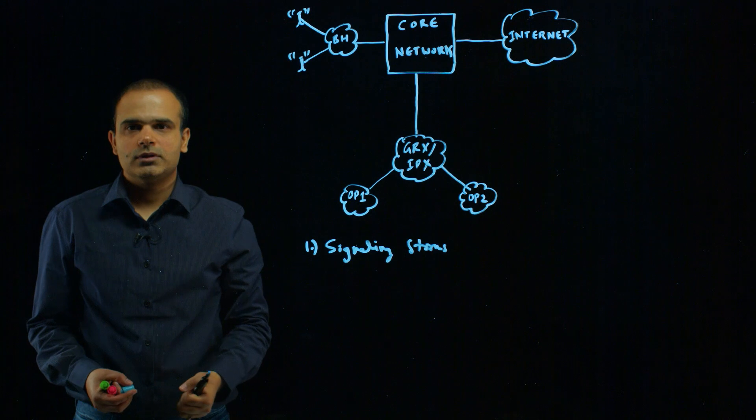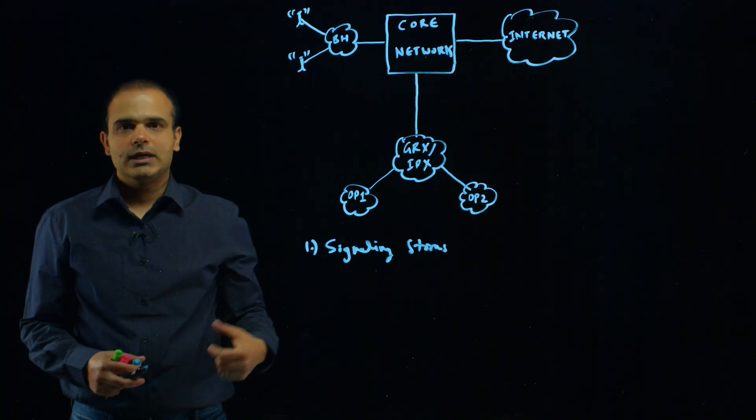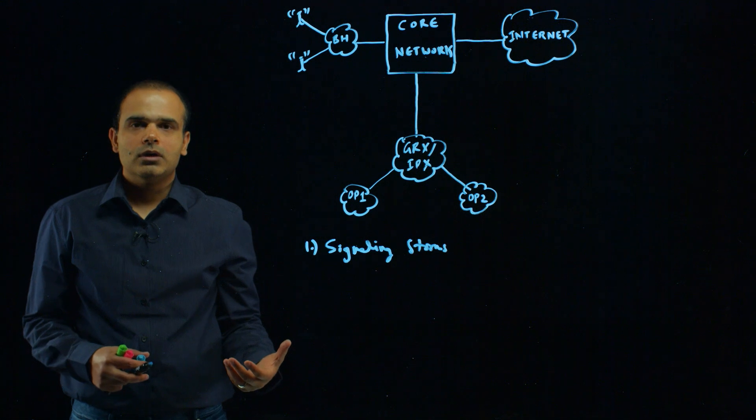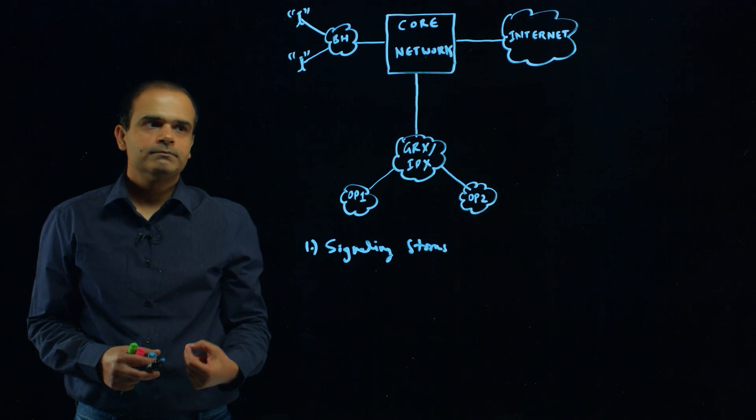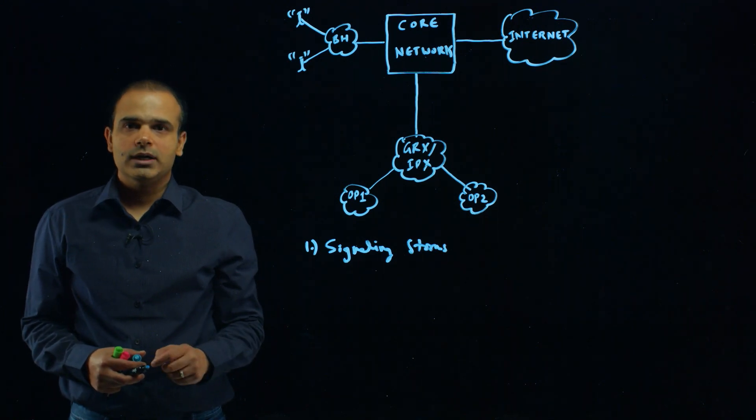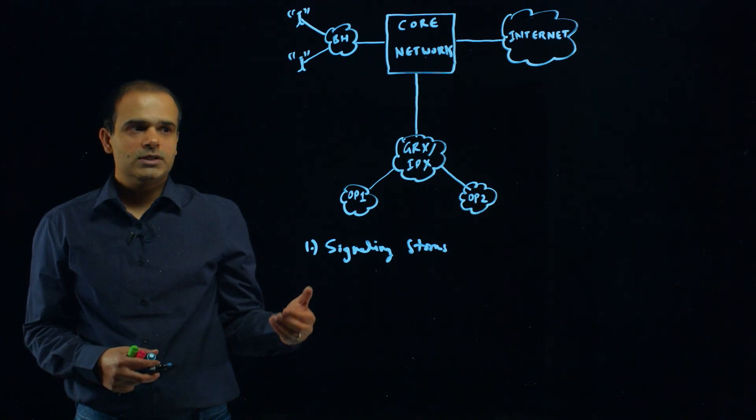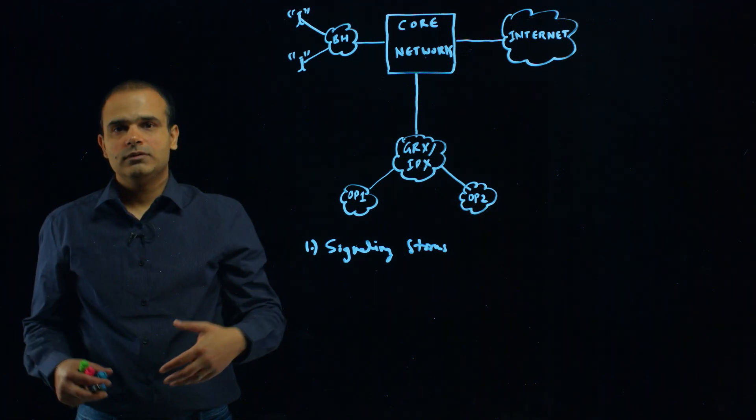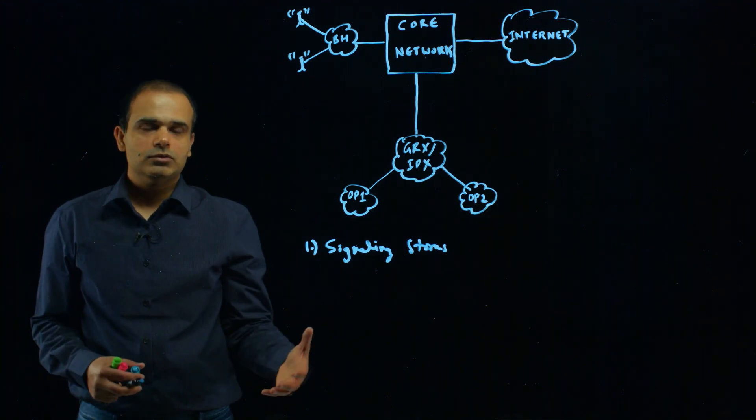There can be different types of signaling storms coming on different signaling protocols like the GTP control protocol. These can be triggered by a malicious attacker or by a partner operator. These can be triggered by different types of subscribers connected to these partner networks.